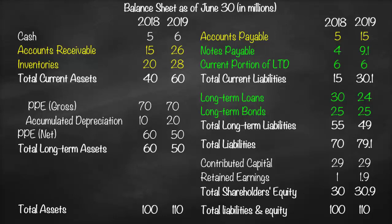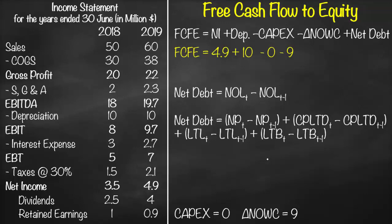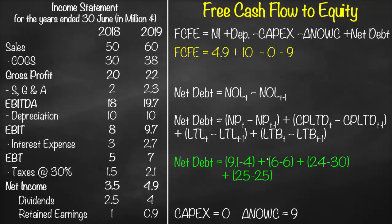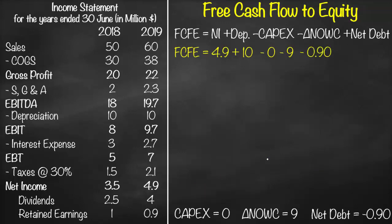Notes payable, current portion of long-term debt, long-term loans, and long-term bonds are all examples of non-operating liabilities. Net debt equals: change in notes payable (9.1 minus 4), plus change in current portion of long-term debt (6), plus change in long-term loans (24 minus 30), plus change in long-term bonds (25 minus 25). This gives net debt of negative 0.9. So in our formula we add negative 0.9, giving free cash flow to equity equal to 5.